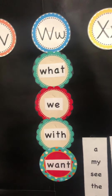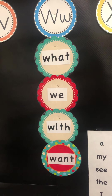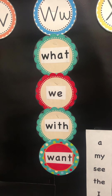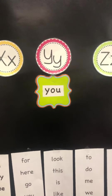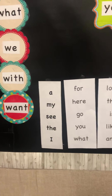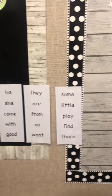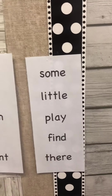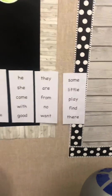Under W, we have 'what,' 'we,' 'with' — with the T-H at the end — and 'want.' Under Y, we have 'you.' I put all of the words we've learned so far — you have learned one, two, three, four, five, six, seven lists, all the way up to the word 'find.' And then this week we're learning two new ones, so we're starting on the next list.